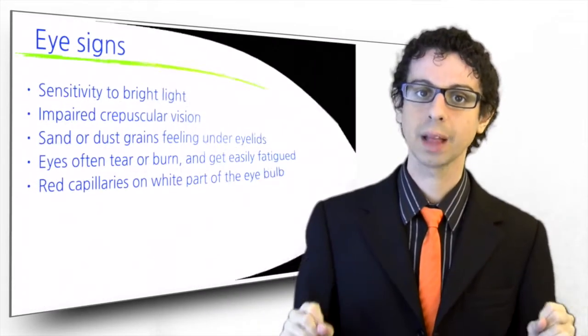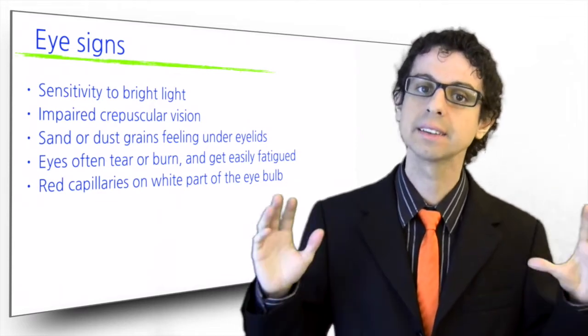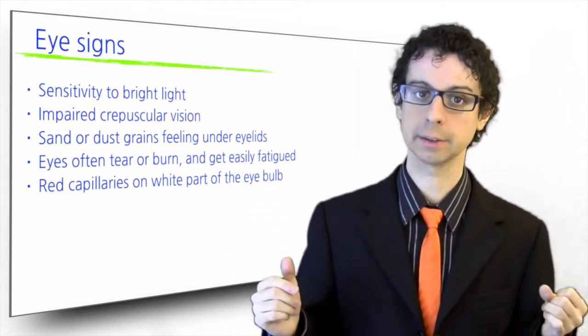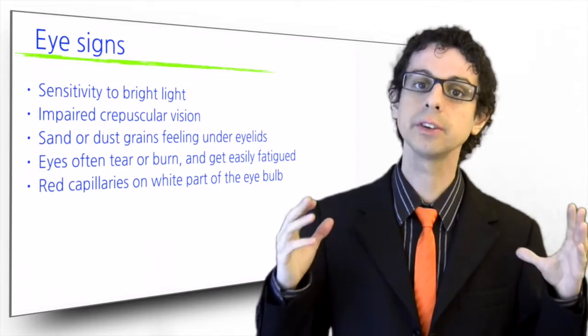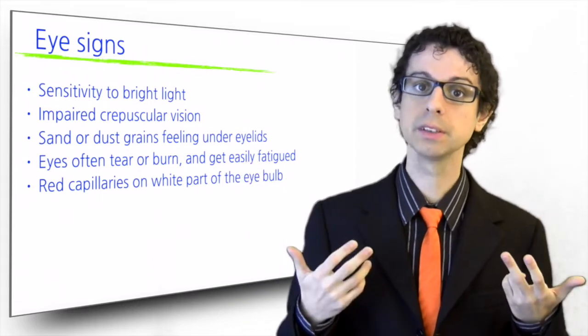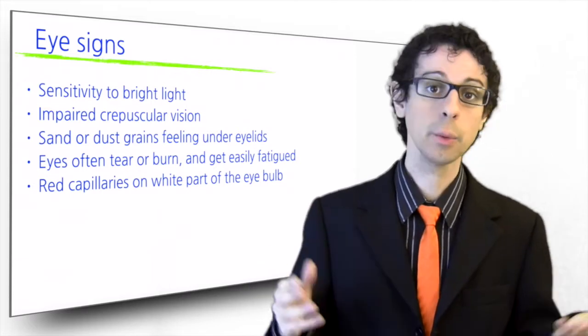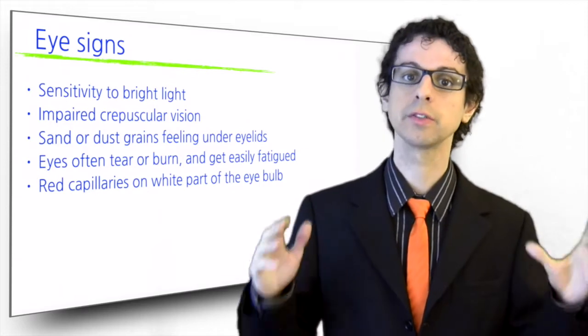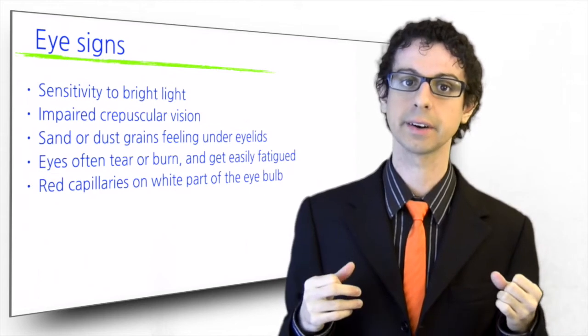Let's now look at the eyes. Vitamin B deficient individuals are very sensitive to intense daylight. Out in the bright light, they are more comfortable wearing sunglasses. In contrast, they have a hard time seeing in dim light. They are often the first to turn on the light as the sun sets. I realized my mom was B deficient when in the afternoon she would keep asking me why I was reading in the dark, when actually I could still perfectly read without any effort. B deficient individuals often rub their eyes and sometimes feel as if they had sand or dust grains under their eyelids.